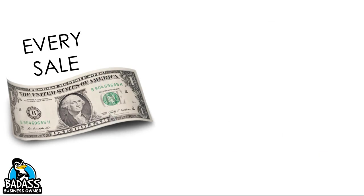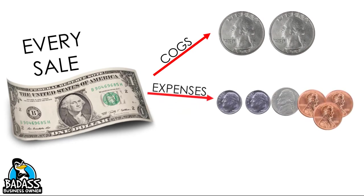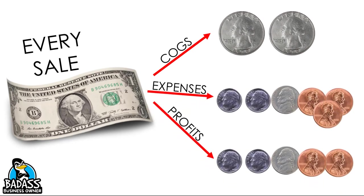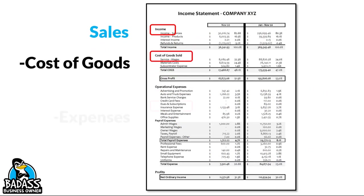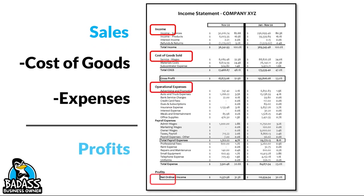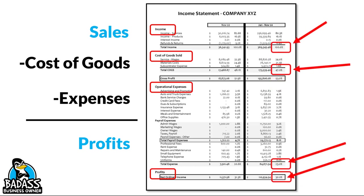Remember: for every dollar you take into your business, it gets split out. First you pay your cost of goods, then your expenses, then you end up with your profits. And what we care about are these percentages right over here, because it's where these percentages get used that helps you figure out if your pricing is done correctly.